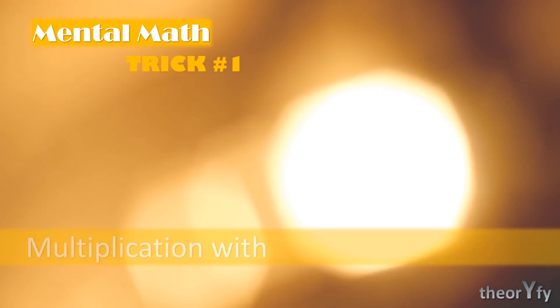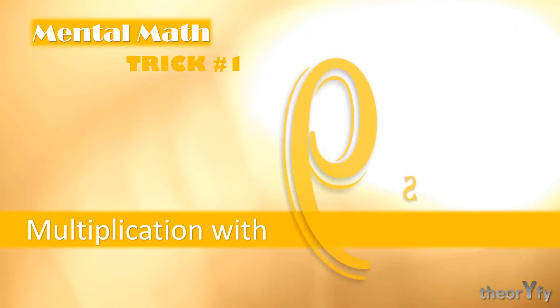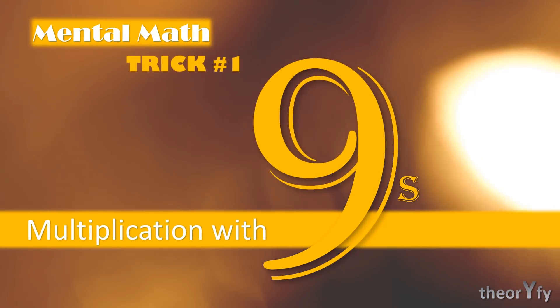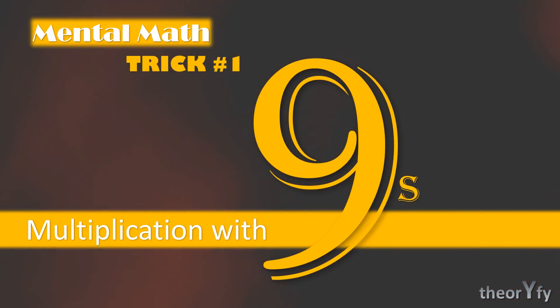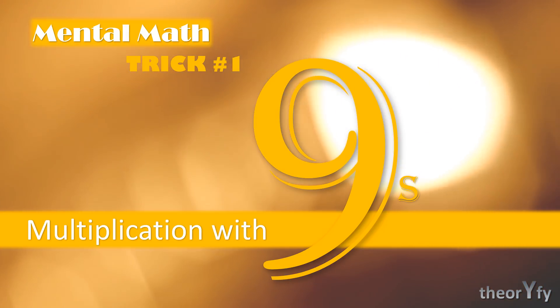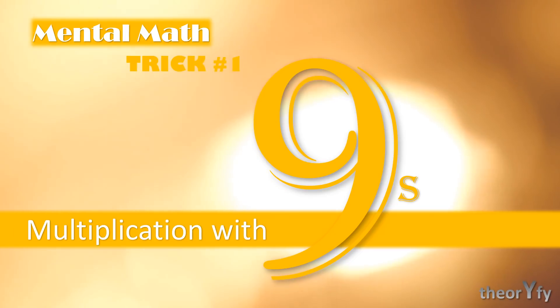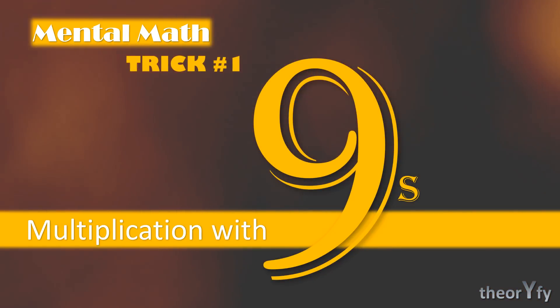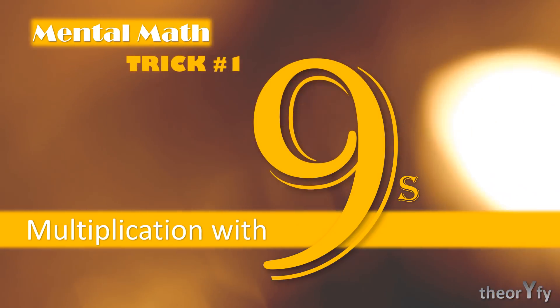This is a chapter from mental math: Trick 1 - Multiplication with nines. So remember the key thing here is that in multiplication, one of the numbers should have all the digits nine. Then only this method will be applicable.